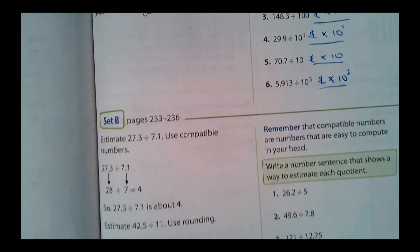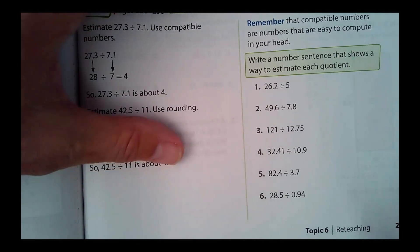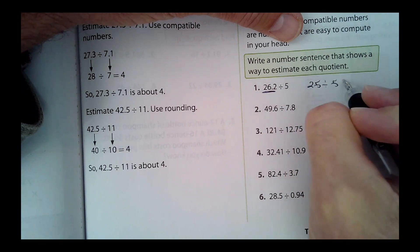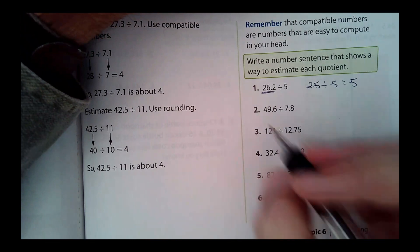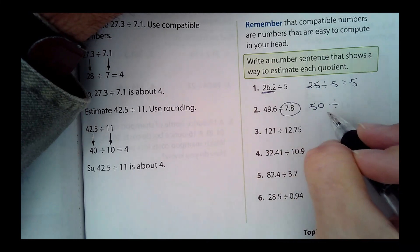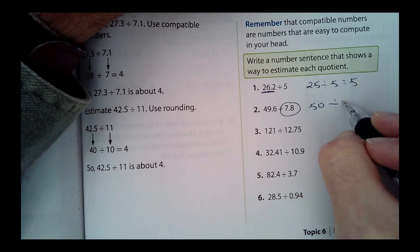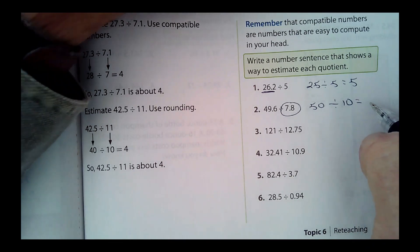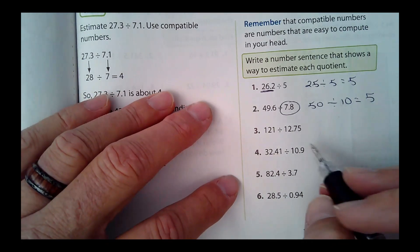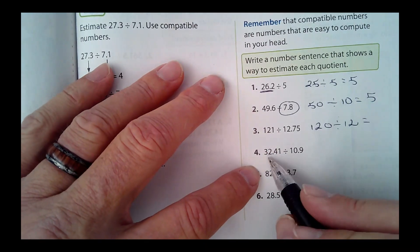Down at the bottom, Set B says 'use compatible numbers.' For the first one, I would change it to 25 divided by 5 equals 5. Number two, I'd call that 50 divided by 10 — that's a stretch, but when we're estimating with compatible numbers there are multiple correct answers, so I think that would be easiest and the answer would also be 5. For the third one, I think I would call it 120 divided by 12.